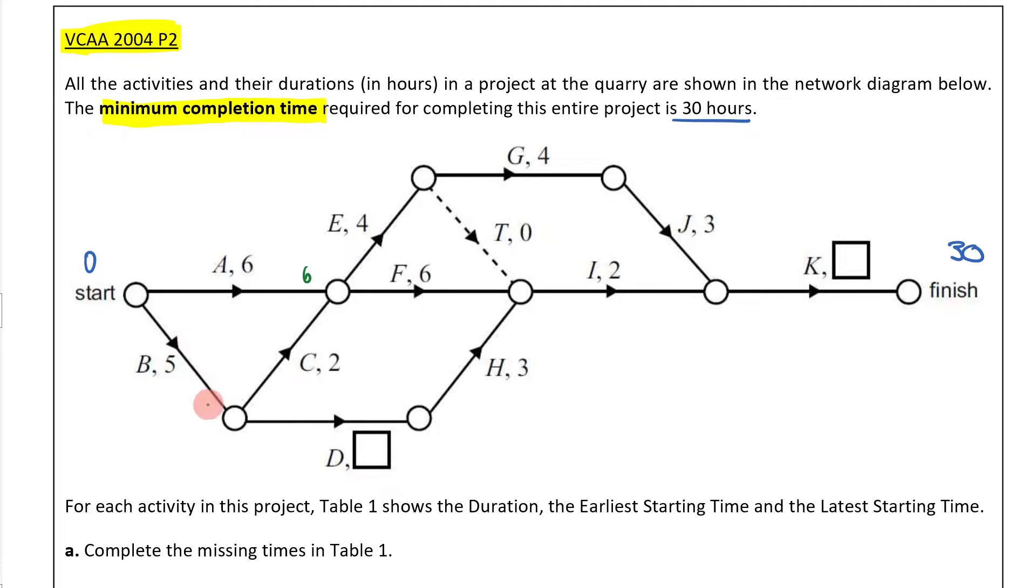This will be 6, 6. This will be 5. This is 5 plus 2 is 7. Circle the bigger number. 7 plus 4 is going to be 11. 11 plus 4 is going to be 15. 11 comes straight down to here. This is going to be 7 plus 6, which is going to end up being 13.